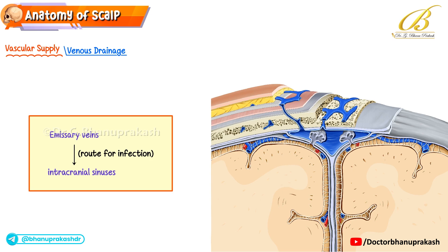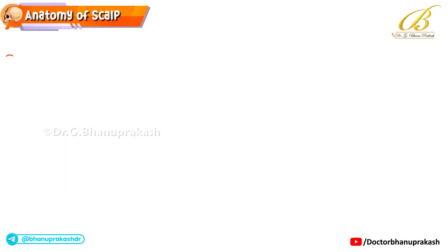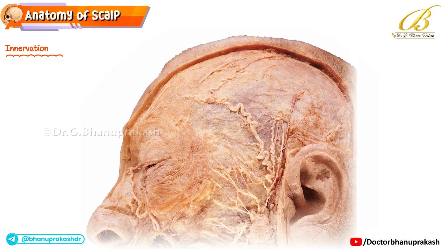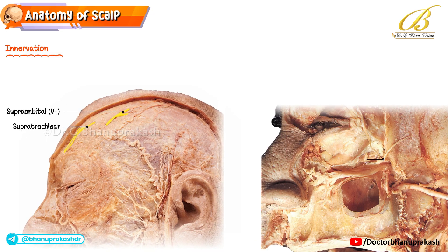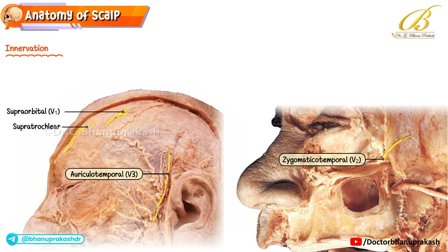The scalp receives sensation from branches of all three divisions of the trigeminal nerve as well as cervical nerves. At the front, the supratrochlear and supraorbital nerves supply the anterior scalp all the way up to the vertex. Along the anterolateral temporal region, the zygomaticotemporal nerve provides sensation. Just in front of the ear and across the temple, the area is supplied by the auriculotemporal nerve.